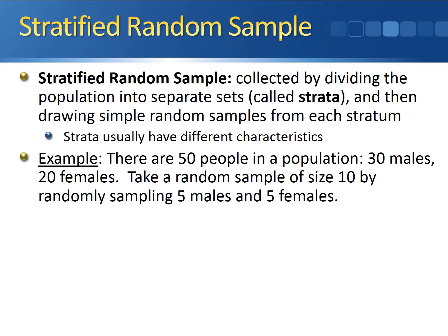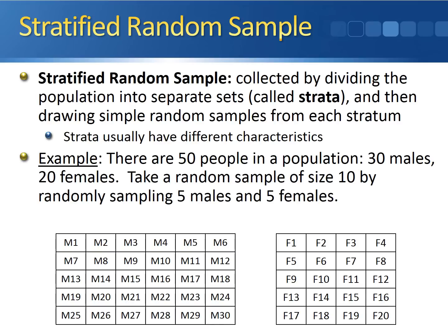For example, let's say we're working with the same population of 50 people, but we know that there are 30 males and 20 females. What we want to do is take a random sample of size 10 by randomly sampling 5 males and 5 females. This guarantees that both genders are going to be represented. We don't have the possibility of sampling 10 males or 10 females. It guarantees that both males and females are represented in the sample.